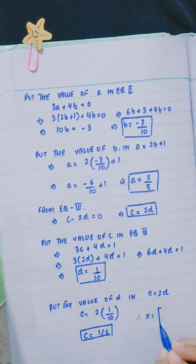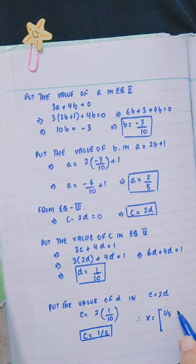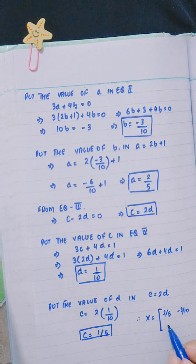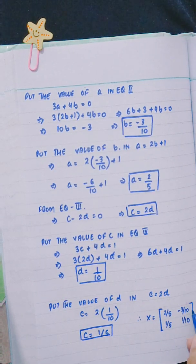Therefore, matrix X = [2/5, -3/10; 1/5, 1/10].